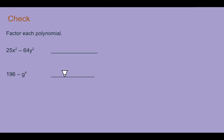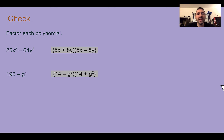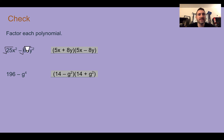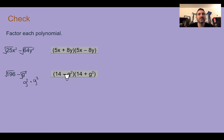Check your understanding: factor each polynomial. Pause the video now and complete the check. Check your answers. The first one is 5x plus 8y and 5x minus 8y. In the second one, it's 14 minus g squared and 14 plus g squared. It doesn't matter which factor comes first as long as you have the correct two binomials. The square root of 25 is 5 with an x; the square root of 64 with a y is 8. The square root of 196 is 14. g to the fourth is g squared times g squared, so the square root is g squared.